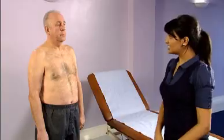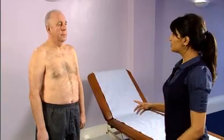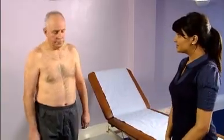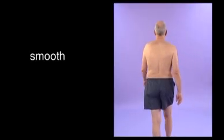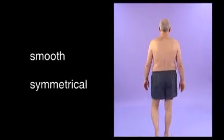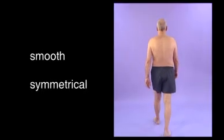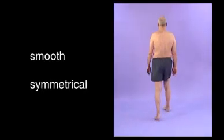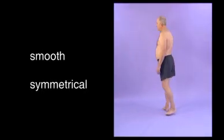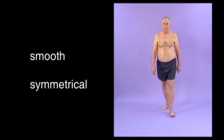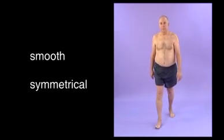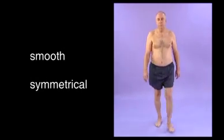Can I ask you to stand here, walk towards the wall, turn around and come back? All movements of gait should be smooth and symmetrical, including arm swing, pelvic tilt and stride length. The ability to turn quickly is absent in back, hip or knee disease.